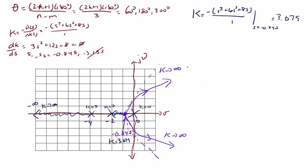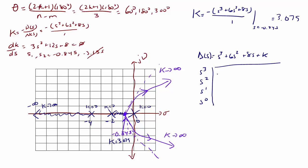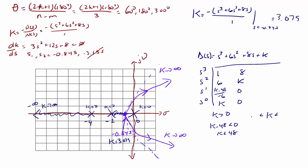Now let's determine the range of k values for stability using the Routh-Hurwitz criterion. The characteristic polynomial is delta(s) equals s cubed plus 6s squared plus 8s plus k. Setting up the Routh array with rows for s cubed, s squared, s to the first, and s to the zero, the entries are 1, 8, and 6k, then k minus 48 over negative 6, then k. For stability, k must be greater than 0, and k minus 48 must be less than 0, so k must be less than 48. Therefore k must be between 0 and 48.